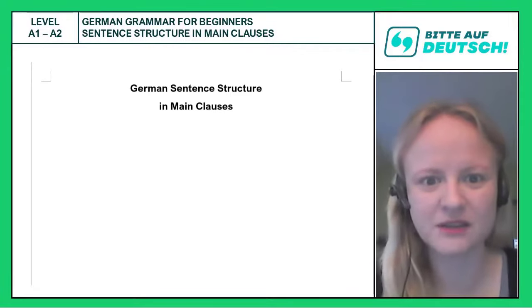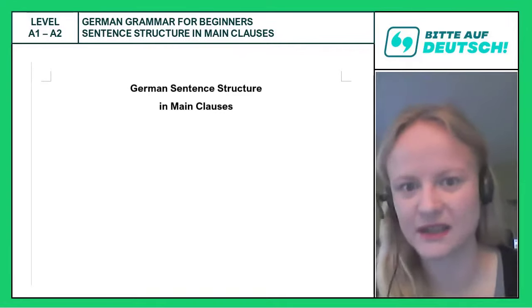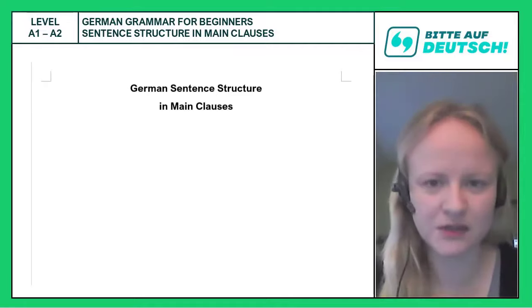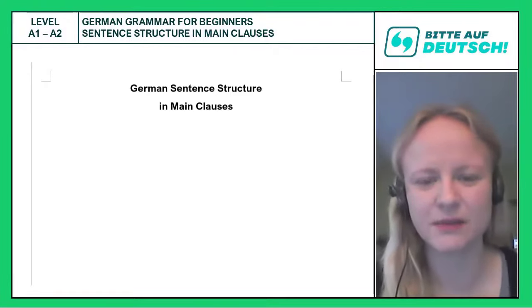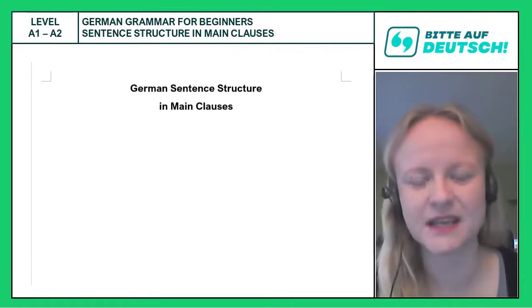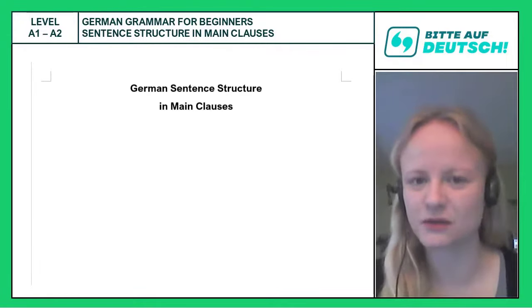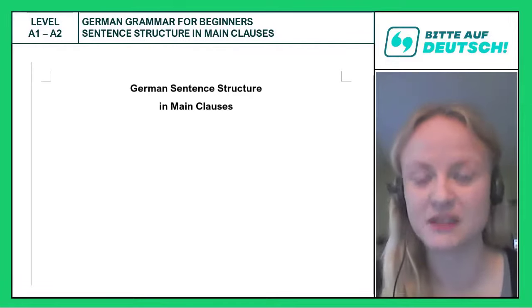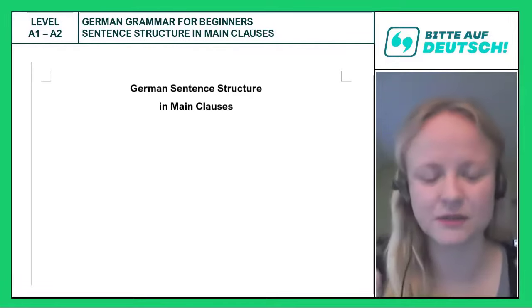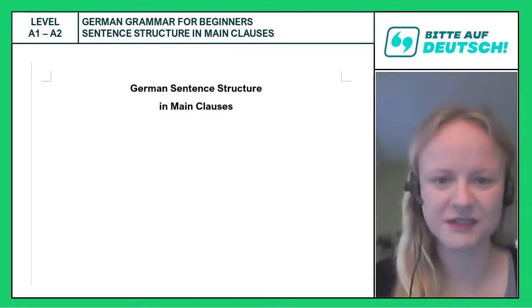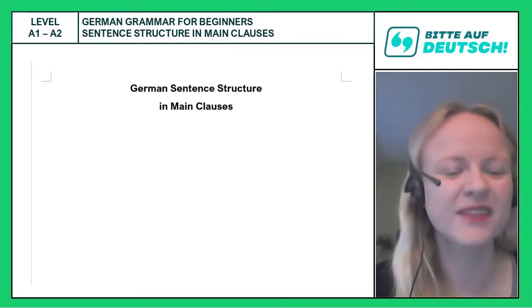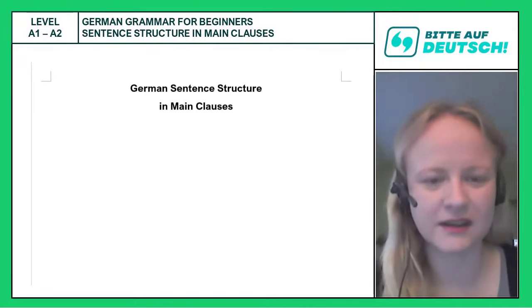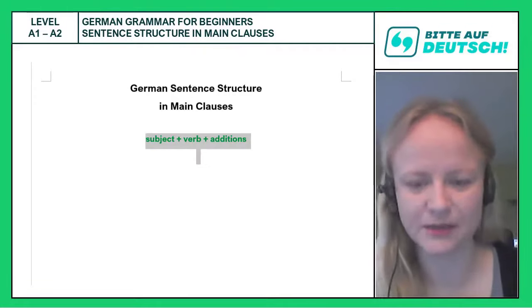German, like most other languages, differentiates between main clauses and subordinate clauses. This lesson is on main clauses only, because they can stand by themselves — they do not need a subordinate clause. However, you can never have a subordinate clause without a main clause. So this is where to start. I want to show you a couple of structural items and also example sentences.